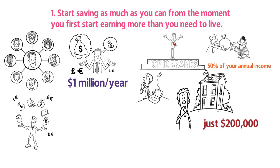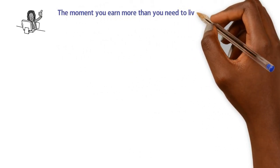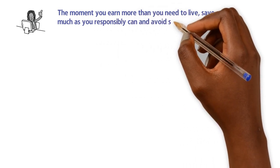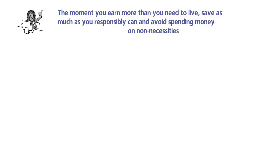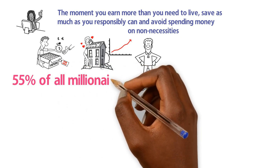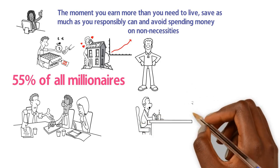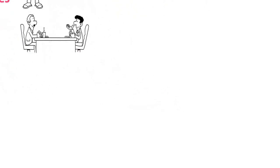But if you truly want to be a millionaire, you never even have to earn near that much. Not with this rule anyways. The moment you earn more than you need to live, save as much as you responsibly can and avoid spending money on non-necessities. Having a good budget and living a frugal life is really all you need to build wealth, especially if you start young. Around 55% of all millionaires credit their wealth to simply being deliberate about their finances and having discipline when it comes to saving.